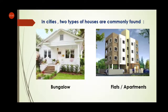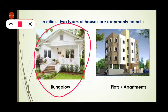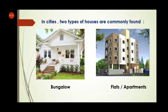Now look at this picture. In cities, two types of houses are commonly found — bungalow and flats or apartments. Look at this picture; this is a bungalow. The spelling of bungalow is B-U-N-G-A-L-O-W. The spelling of flats is F-L-A-T-S. The spelling of apartments is A-P-A-R-T-M-E-N-T-S. These types of houses are generally found in cities.